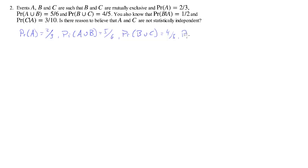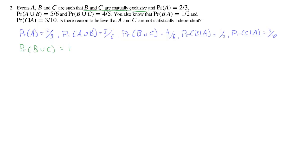We also know two conditional probabilities: the probability of B given A is equal to one-half, and the probability of C given A is three-tenths. We're also given a vital piece of information — B and C are mutually exclusive. That means the probability of B or C is the same as the probability of B plus the probability of C, and we are given that probability of B or C is four-fifths.